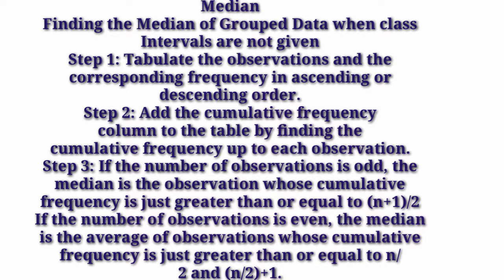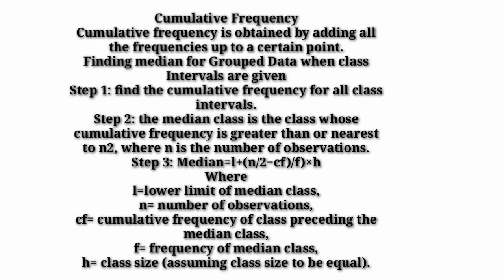This is the formula to find out the median. For discrete or ungrouped data, you can find the median by applying the formula for odd and even observations. Cumulative frequency is obtained by adding all the frequencies up to a certain point — you keep adding consecutive frequencies to get the cumulative frequency.